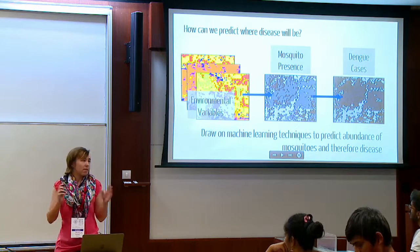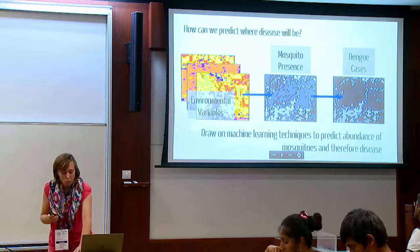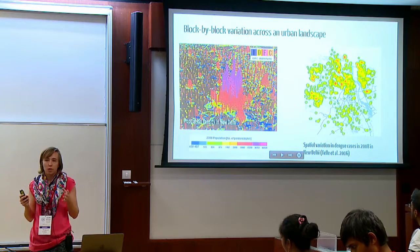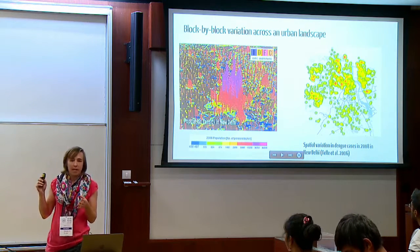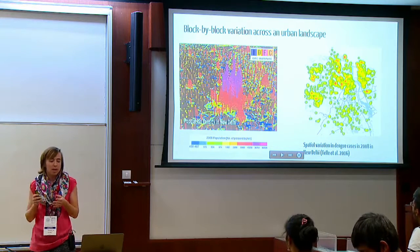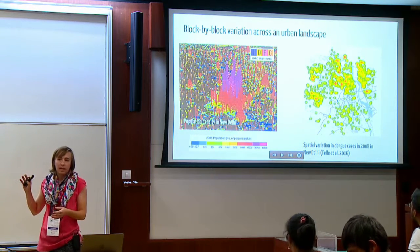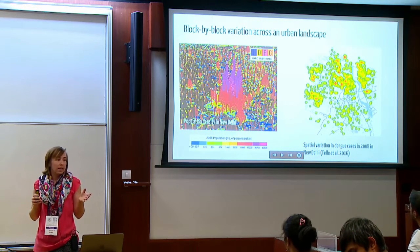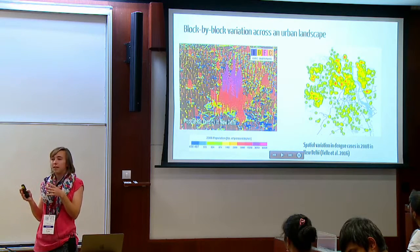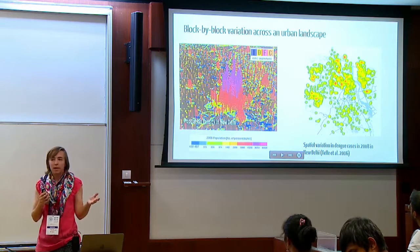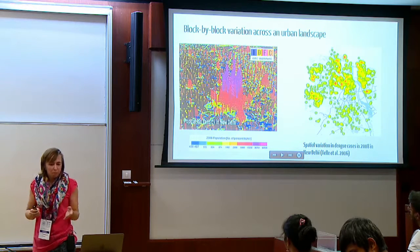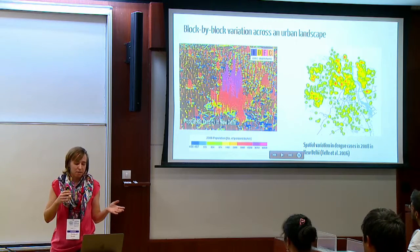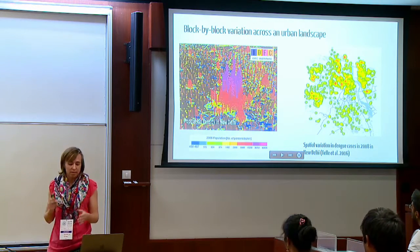This works really well at the country or regional level, but what about a city? Cities have a high amount of block-by-block, intra-urban variation. Looking at a map of population density in New Delhi alongside a map of Dengue cases in New Delhi, both show a lot of variation — Dengue cases in particular might be very high in one area while a neighboring district is relatively disease-free. It's really hard to use global-scale methods to predict disease within cities.